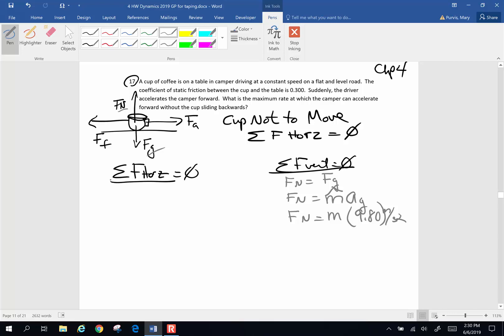Now horizontally, if the sum of the forces equal zero, that means force applied will equal friction force. And the force applied is going to be mass times acceleration, and the force of friction is mu times normal force. This is going to be the mass of the cup times the rate at which the whole thing is accelerated.